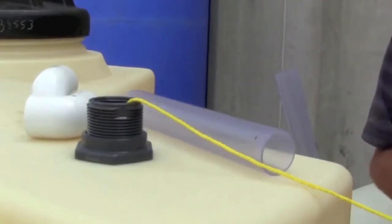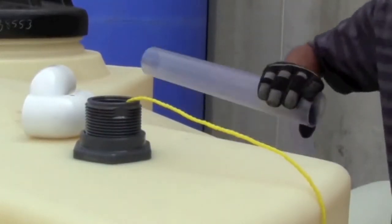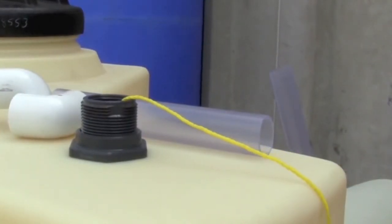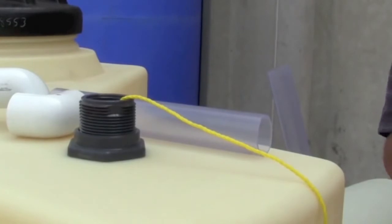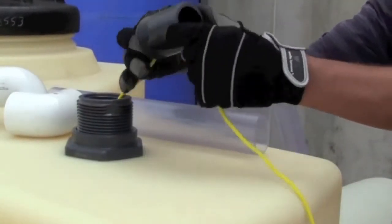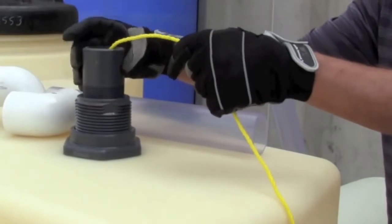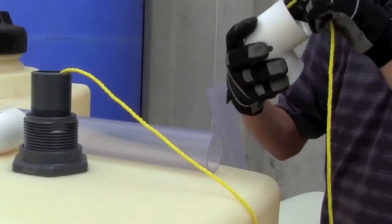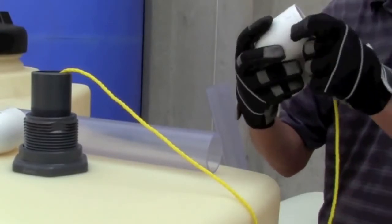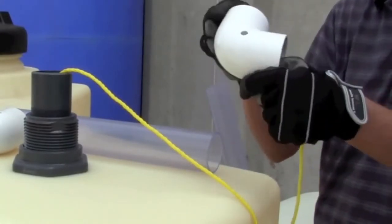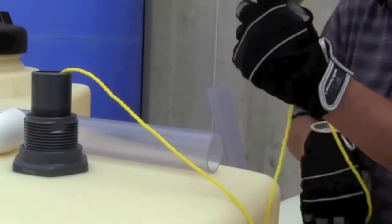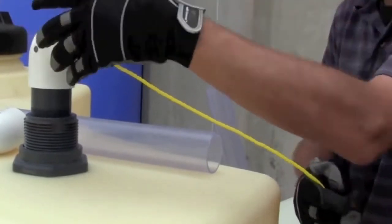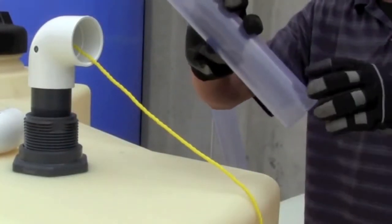First will be the toe nipple and we'll run it through the rope. Next, the elbow with the roller pulley. Followed by a horizontal pipe.